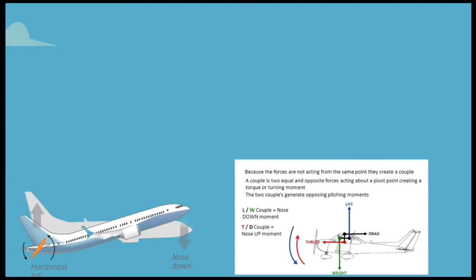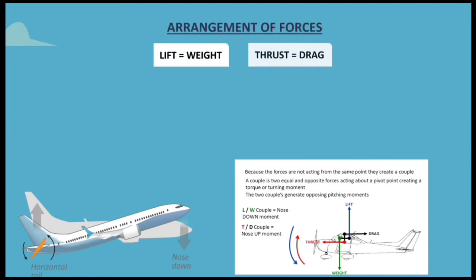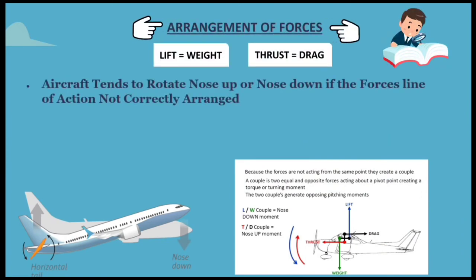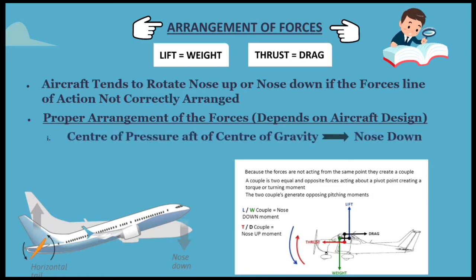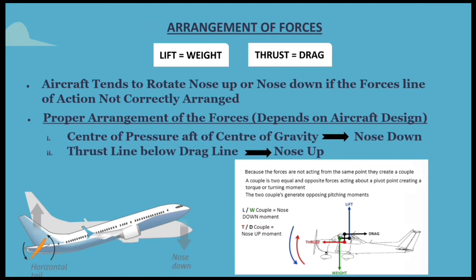When the lift force is equal to the weight force, the aircraft is in a state of equilibrium and neither gains nor loses altitude. For example, an airplane traveling at 200 knots has four times the lift as the same airplane traveling at 100 knots if the angle of attack and other factors remain constant. An aircraft tends to rotate nose up or nose down if the forces' lines of action are not correctly arranged. Center of pressure aft of center of gravity creates a nose-down couple; thrust line below drag line creates a nose-up couple.